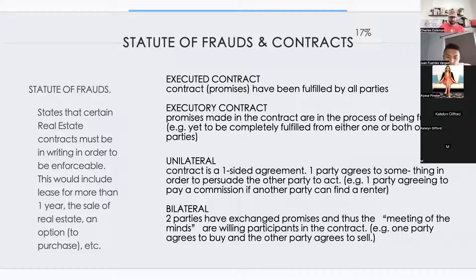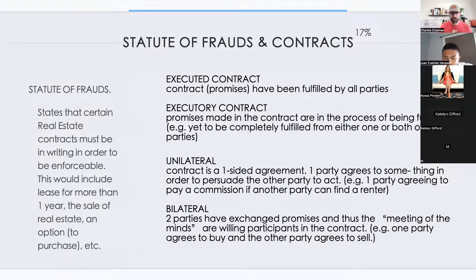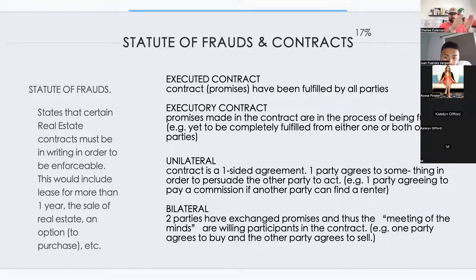Types of contracts: An executed contract means all promises have been fulfilled — we have completed the contract 100%. An executory contract means we're in the process — there are still a couple more steps before we get to the finish line.